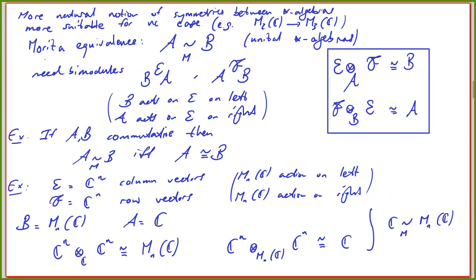That is what I mean when I say Morita equivalence is more natural: for instance, M₂(C) and M₃(C) are Morita equivalent to each other because Morita equivalence is an equivalence relation and one can pass from M₂(C) to C and back to M₃(C). The upshot is that matrices do not really change this equivalence class. And in the context of non-commutative N-point spaces, it means we can work just with the N points — there is additional structure internally, but Morita equivalence washes this out.